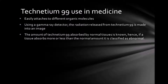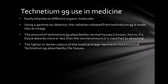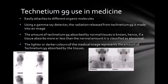The amount of Technetium-99 absorbed by normal tissues is known. Hence, if a tissue absorbs more or less than the normal amount, it is classified as abnormal. The abnormality of a tissue is seen through the colour of the image, with the amount of Technetium absorbed shown through lighter or darker colours.